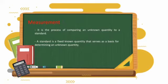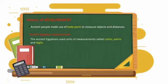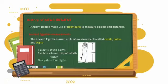How did the measurement start? Before there were no tools for measuring things, so ancient people made use of body parts to measure objects and distances. The ancient Egyptians used measurements called cubits, palms, and digits. So 1 cubit is equal to 7 palms. Also 1 cubit is equal to elbow to tip of middle finger as shown in the picture. 1 palm is equal to 4 digits.